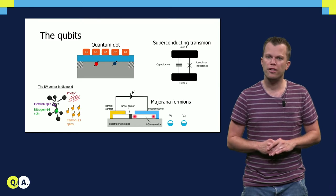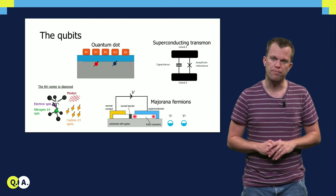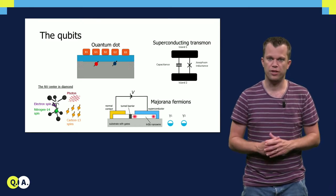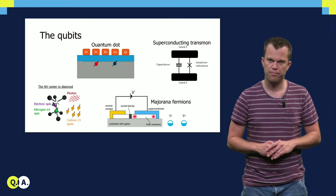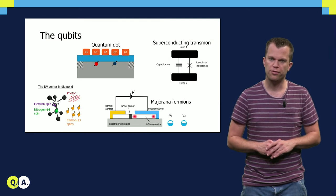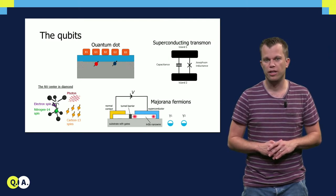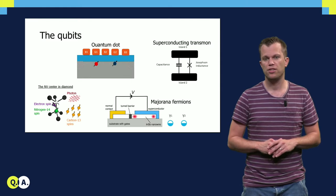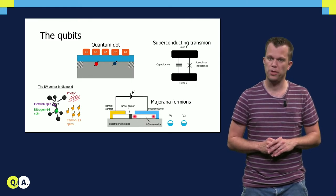Today we do not know what the best qubit platform will be, and so there is an active race going on between all these different platforms. We also often find out that developments made in one platform can be implemented into other platforms, and so all these activities strongly benefit from each other.